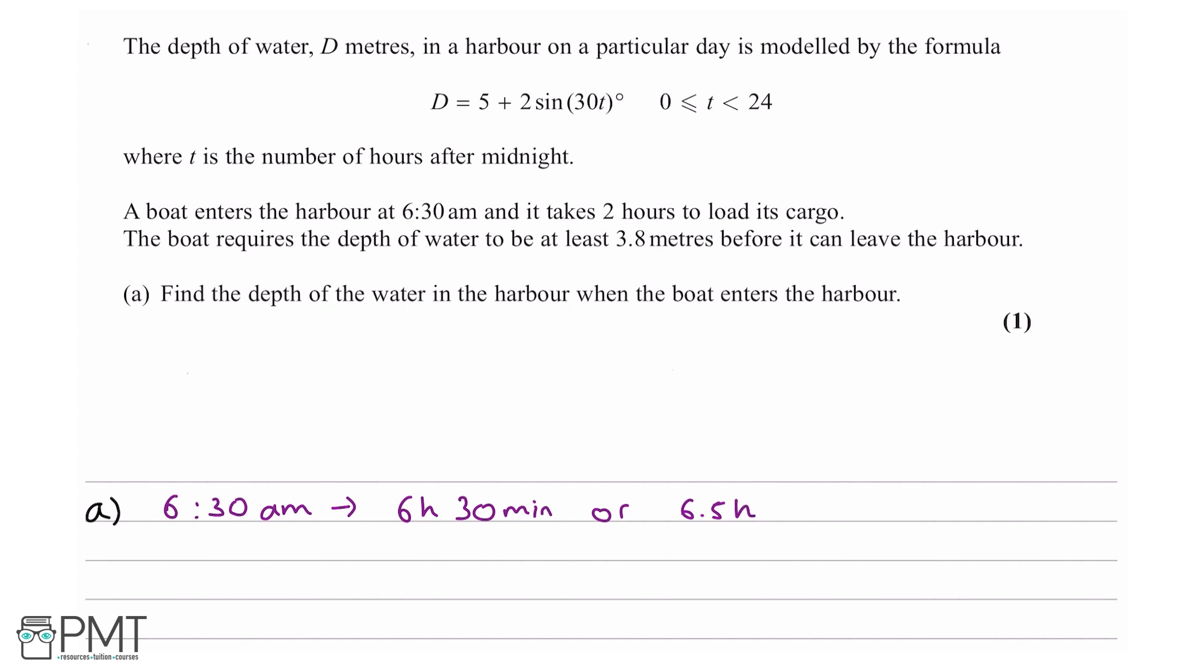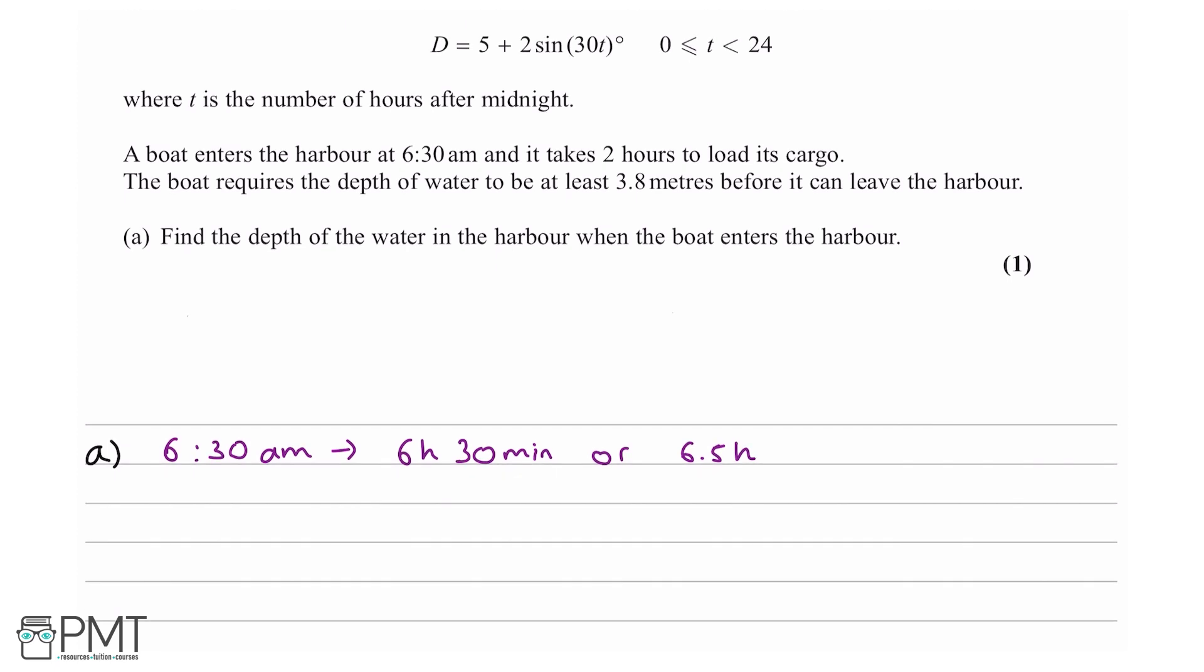Then from here, it's pretty straightforward. All we need to do is say that d equals 5 plus 2 sine and then in brackets 30 times 6.5, which equals 4.48 metres.